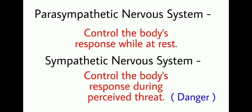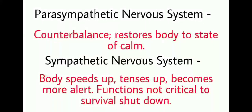Let's see the differences. The parasympathetic nervous system controls the body's response while at rest, and counterbalances by restoring the body to a state of calm. The sympathetic nervous system controls the body's response during a perceived threat or danger — the body speeds up, tenses up, becomes more alert, and functions not critical to survival are shut down.